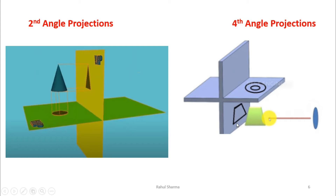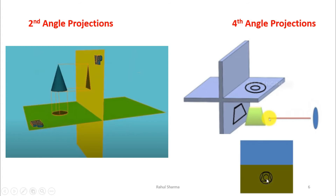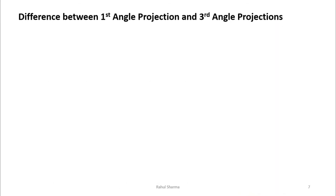In fourth angle projection, take an arbitrary shape whose front view is a trapezium and top view is two concentric circles. When HP is rotated 90 degrees clockwise, both views come down and the trapezium overlaps with the concentric circles — we cannot differentiate them. Even for a simple object this is confusing, so for complex machine parts it becomes impossible. Hence we cannot use second and fourth quadrant for projections.